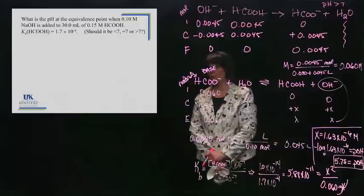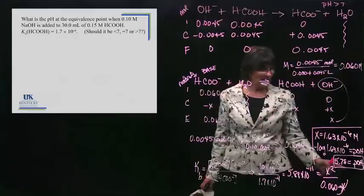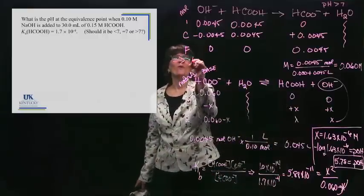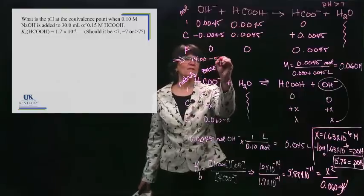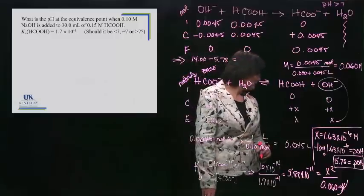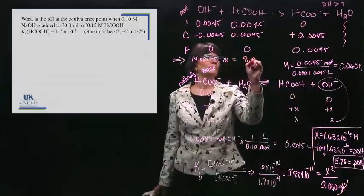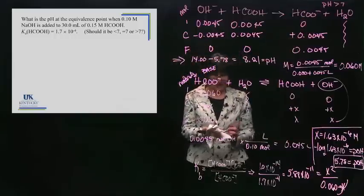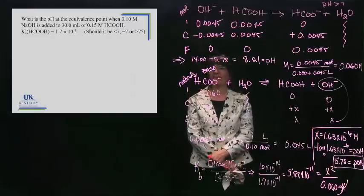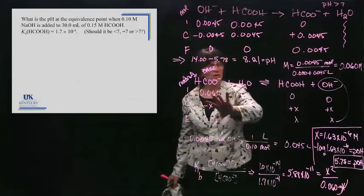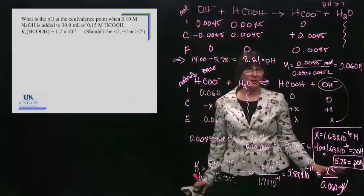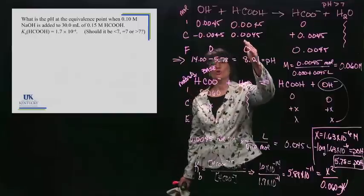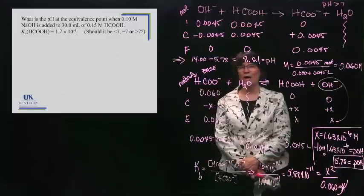The pOH is 5.78. The problem wanted the pH, and we established the pH should be greater than 7. So: 14 − 5.78 = 8.21. That's our pH. And it is greater than 7. That's how we work that problem. First the one-way reaction, then you must consider the equilibrium and do all the equilibrium steps. If it's a buffer there's a shortcut, but at the equivalence point be prepared to do two separate calculations. It takes a lot of practice.